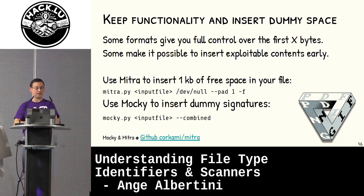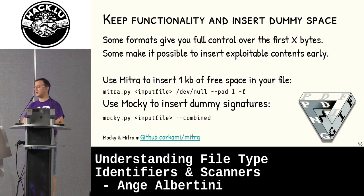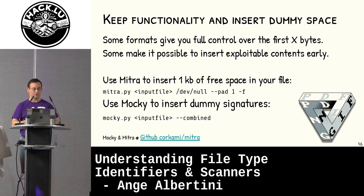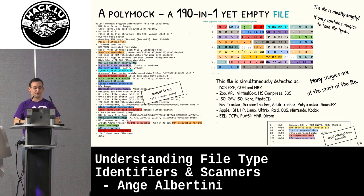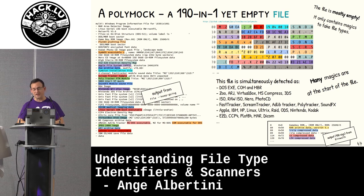Some formats give you full control over the first X bytes, some make it possible to insert exploitable contents early. ISO, binary STL, DCOM — all these formats give you free space to abuse. You can use my tool Mitra to insert free space in your file, or use Mocky to just add dummy signatures to your files. One example I did some time ago was an empty file that contains 190 signatures for binwalk and other tools. This one doesn't contain anything functional, but it's still detected — it triggers a lot of detection.